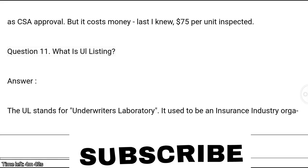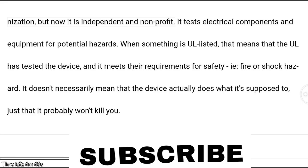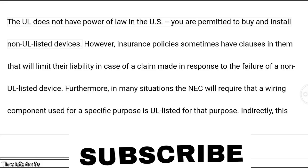Question 11: What is a UL listing? Answer: UL stands for Underwriters Laboratory. It used to be an insurance industry organization but is now independent and non-profit. It tests electrical components and equipment for potential hazards. When something is UL listed, it means the UL has tested the device and it meets their safety requirements for fire or shock hazard. It doesn't necessarily mean the device does what it's supposed to — just that it probably won't kill you.